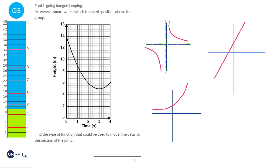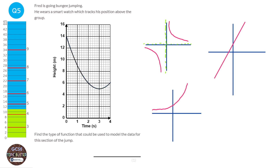The graph shown could be a quadratic, because it has a nice U shape — if we carry this on it could be a nice U shape. It could also be a cubic graph, which goes up, then down, then up. But the most obvious one is a quadratic graph, so our answer is quadratic function.